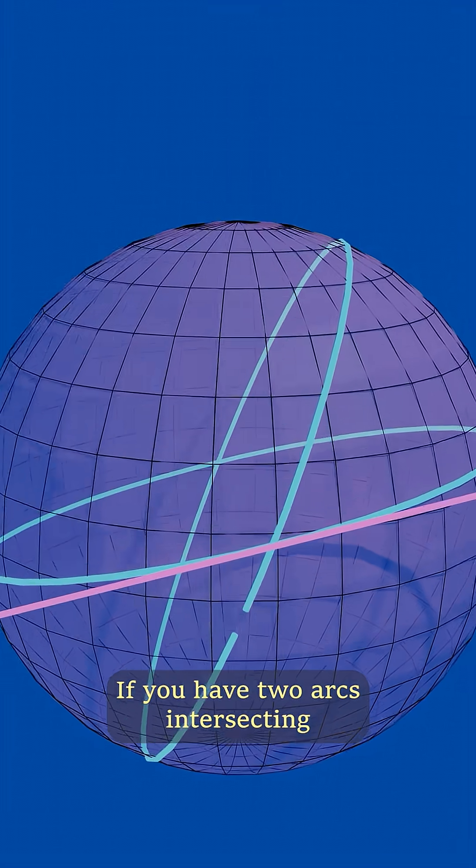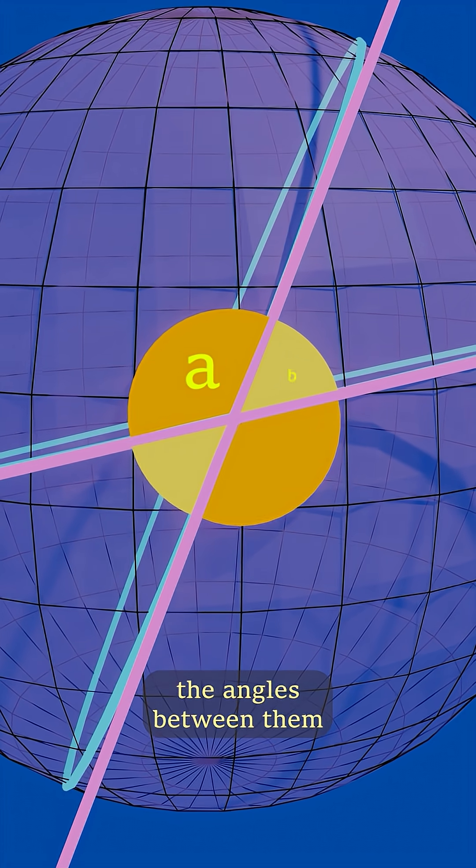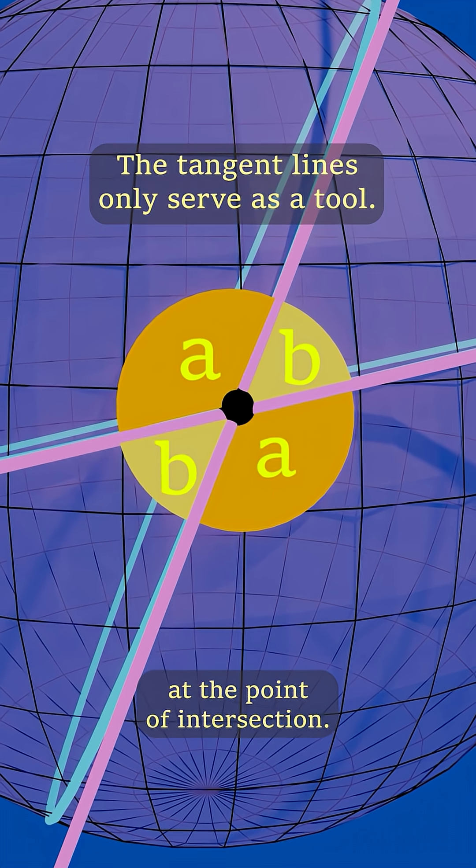Now, let's look at angles. If you have two arcs intersecting, the angles between them can be defined by the tangent lines at the point of intersection.